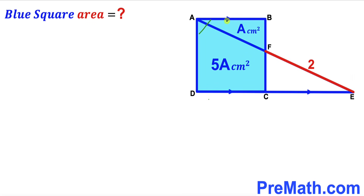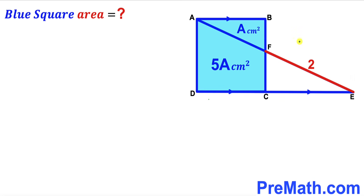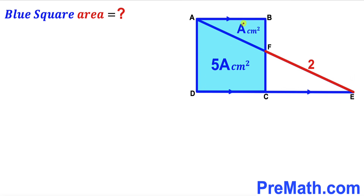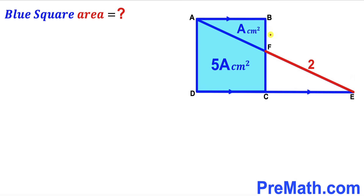Welcome to Pre-Math. In this video we have a blue shaded square ABCD along with a right triangle ADE. The blue shaded square has been divided into two parts: right triangle ABF and trapezoid ADCF. The area of triangle ABF is uppercase A cm², the area of trapezoid ADCF is 5A cm², and segment EF has length 2 cm. Our task is to calculate the area of the blue shaded square ABCD.